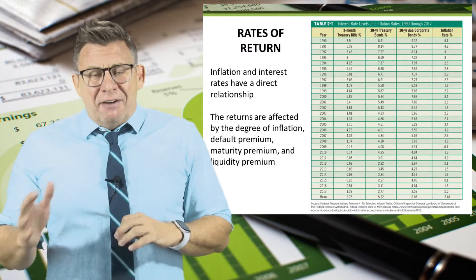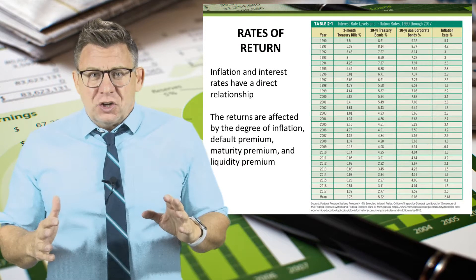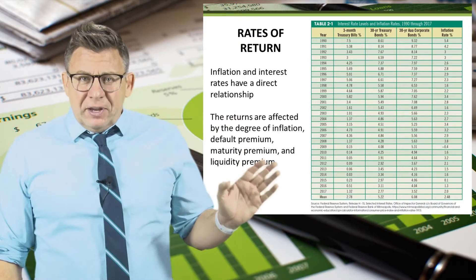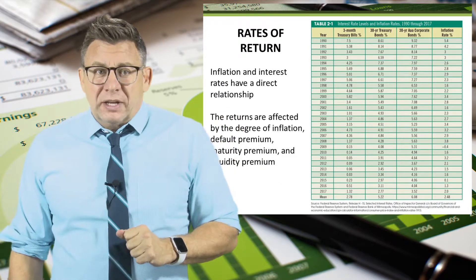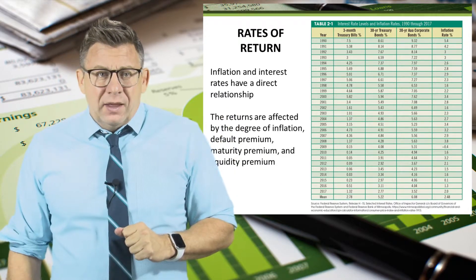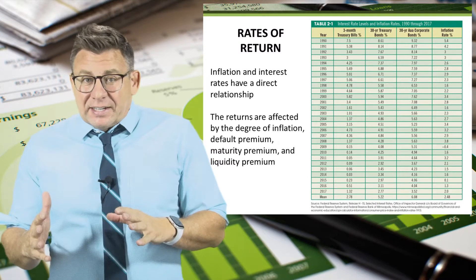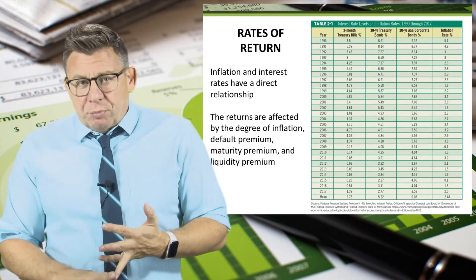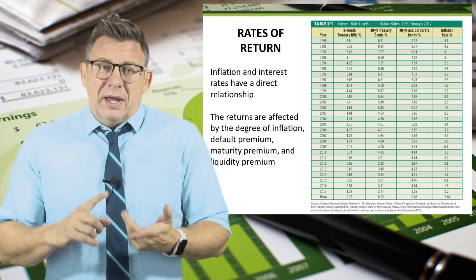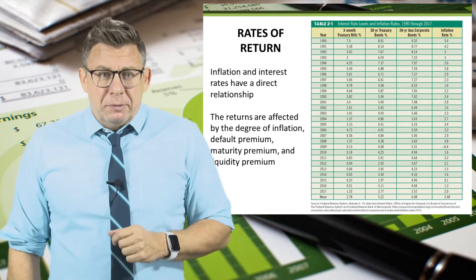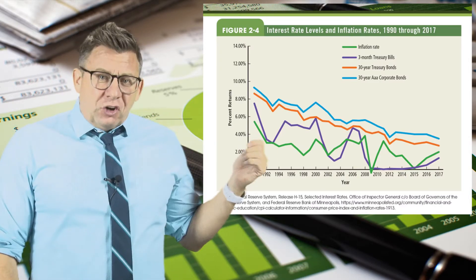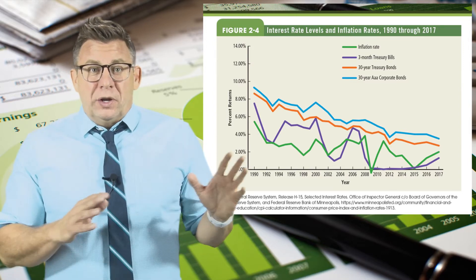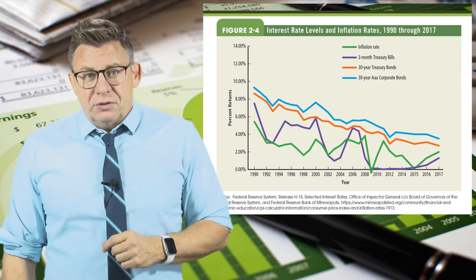This table shows average returns over a 30-year period. Notice that inflation and interest rates have a direct relationship. These returns are affected by the degree of inflation, default premium, maturity premium, and liquidity premium. This chart makes it easier to see the correlation between returns and inflation.